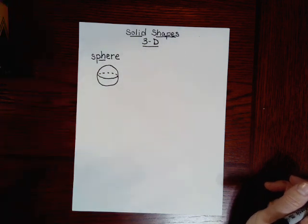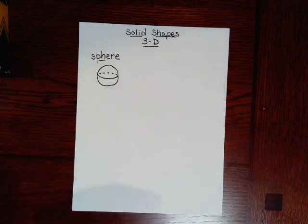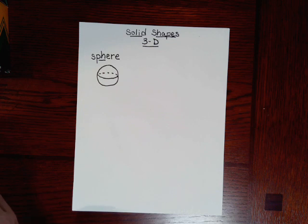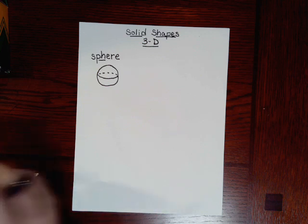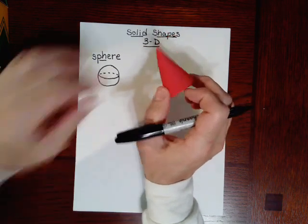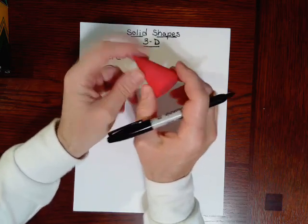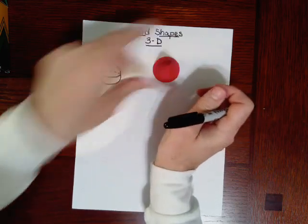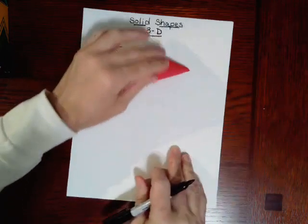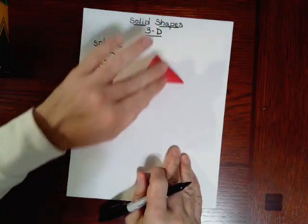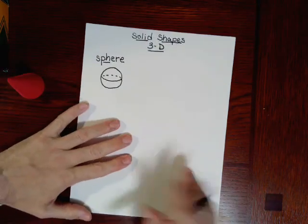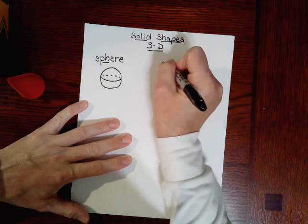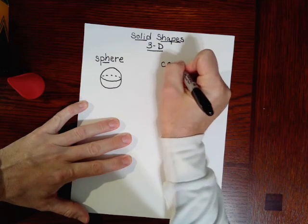Now, our second solid shape has a curved surface, and it has a flat surface. What shape do you think I'm talking about? It's this one. This is called a cone. A cone, like an ice-cream cone. The flat surface is usually the bottom. And the curved surface is the side. So let's write the word cone on our paper. C-O-N-E. Cone.